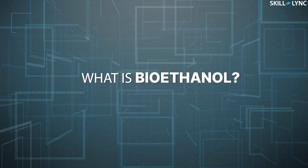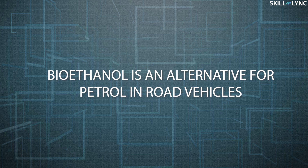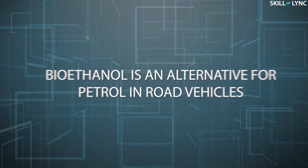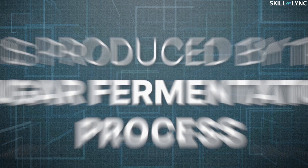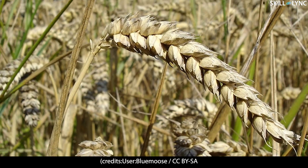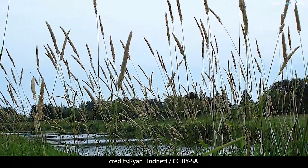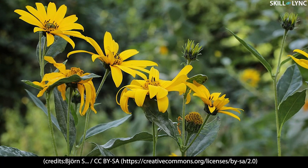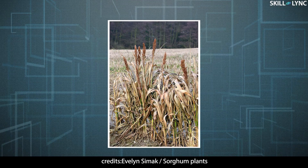So what is bioethanol? Like biodiesel, an alternative for diesel — which was our previous topic — bioethanol is an alternative for petrol in road vehicles. It is produced by the sugar fermentation process. Not only rice straws, but also corn, sugarcane, wheat, willow, poplar trees, reed canary grass, cord grass, Jerusalem artichoke, miscanthus, and sorghum plants can also be used for this sugar fermentation process.